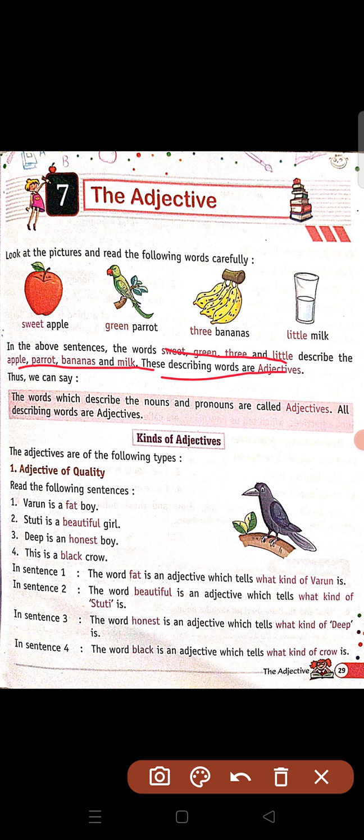So look at the above words: sweet, green, three and little. These are describing your pictures. Apple is sweet, parrot is green, bananas are three, milk is a little amount. So these describing words are adjectives.